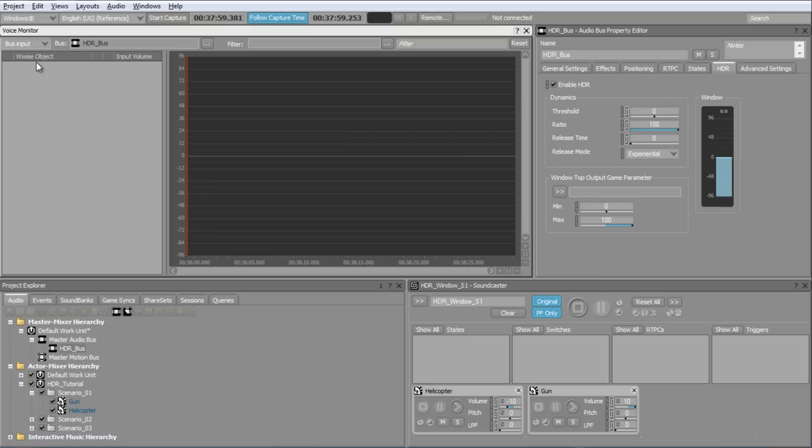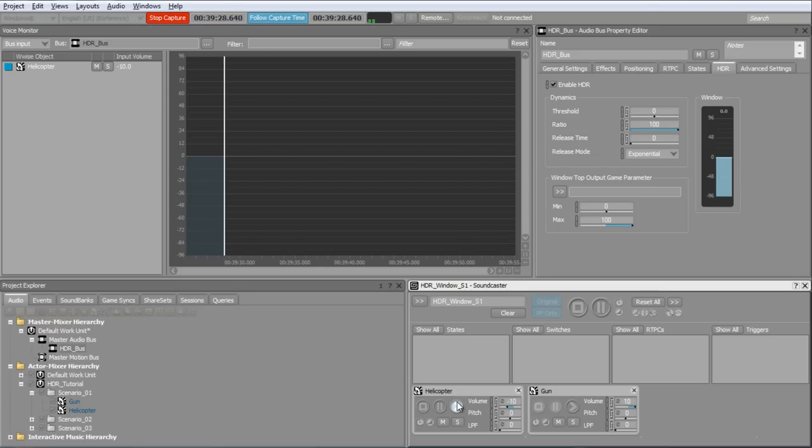The following is a simple scenario, which uses a helicopter sound set to minus 10 dB, and a gunshot sound set to plus 10 dB. They are both routed to the HDR bus, which is set with the default threshold setting of 0 dB. This means that the gunshot sound will raise the window by 10 dB, which will lower the helicopter sound by 10 dB.